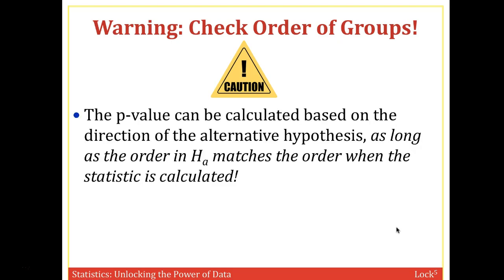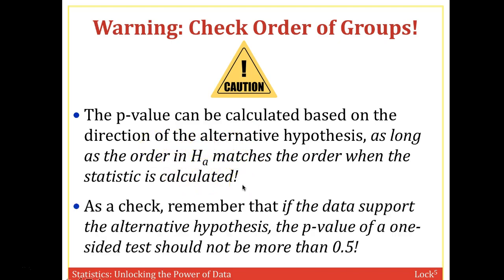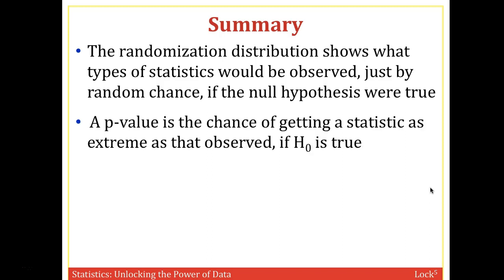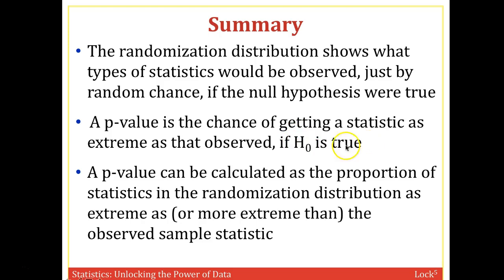As a caution: the p-value is calculated based on the direction of the alternative hypothesis, so make sure the order of your alternative matches the order when the statistic is calculated. As a check: for a one-sided test with a less-than or greater-than alternative, the p-value cannot be more than 0.5. In summary: the randomization distribution shows what statistics would be observed by random chance if the null hypothesis were true. A p-value is the chance of getting a statistic as extreme as observed if H0 is true, calculated as the proportion of statistics in the randomization distribution as extreme as or more extreme than the observed sample statistic.